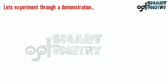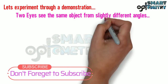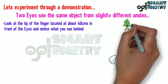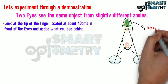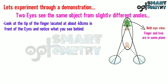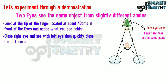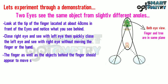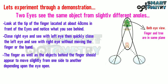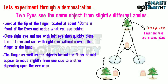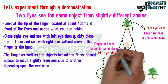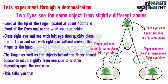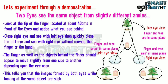Let's experiment through a demonstration. Two eyes see the same object from slightly different angles. Look at the tip of a finger located about 40 cm in front of the eyes and notice what you see behind it. Close the right eye and see with the left eye, then quickly close the left eye and see with the right eye without moving the finger. The finger and objects behind it should appear to move slightly from side to side depending on which eye is open. This tells you that the images formed by both eyes while looking at the same object are slightly different.